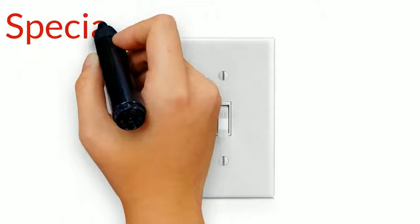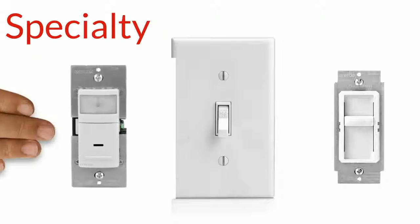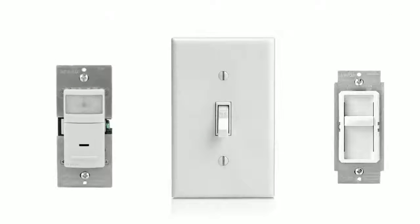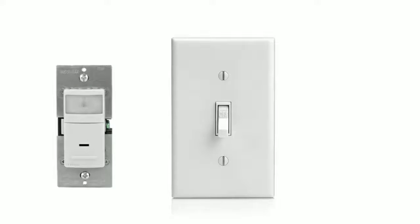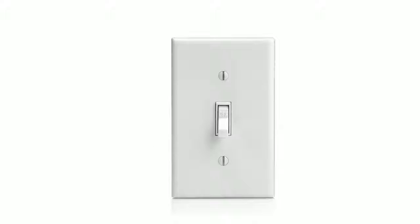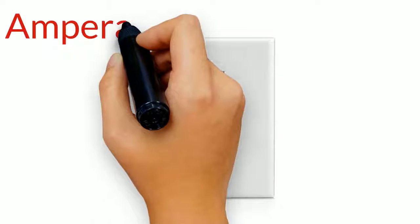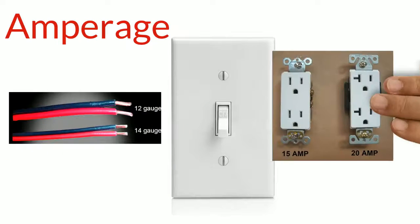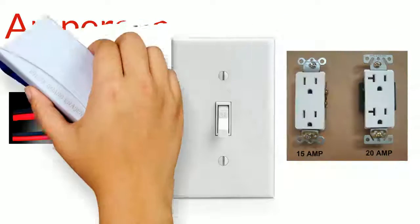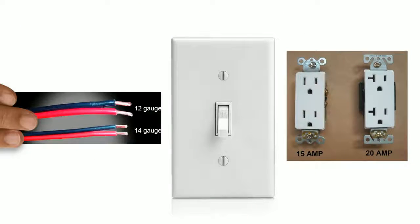Next, take a look at the specialty switches available. In addition to the familiar toggle and rotary switches, specialty switches can do everything from turning on when you walk into a room to adjusting the light levels for different moods. Lastly, make sure that you're choosing the right switch to handle the amperage and different gauges of wire that are being used.